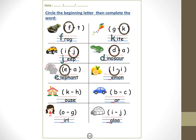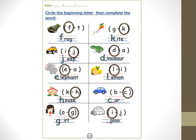Lemon — L, lemon. House — H, H, house. Super! Car — K, car. For the word, letter C. Girl — girl. Igloo — I, I, igloo.